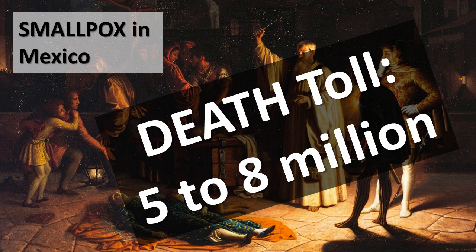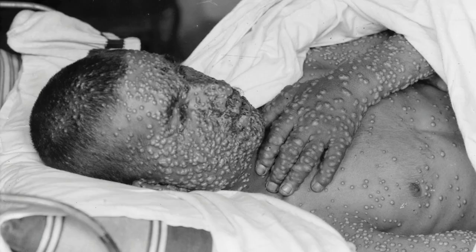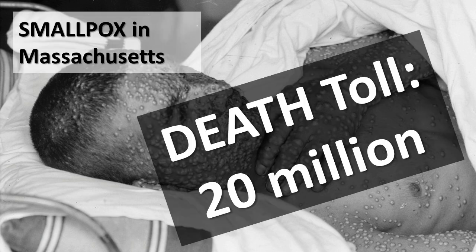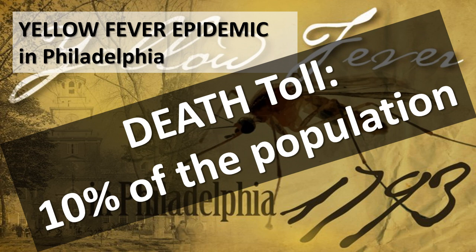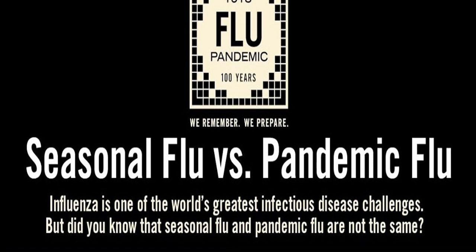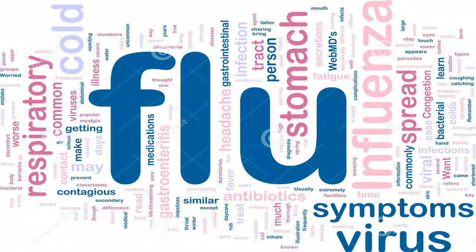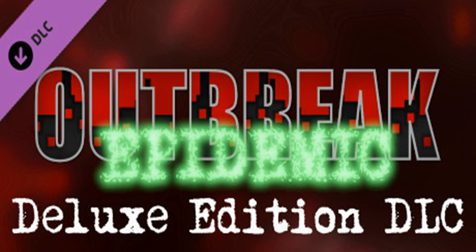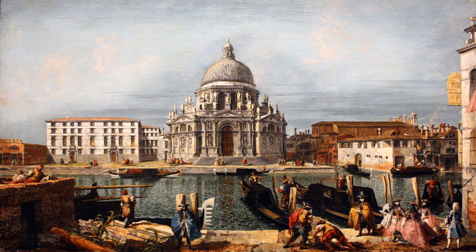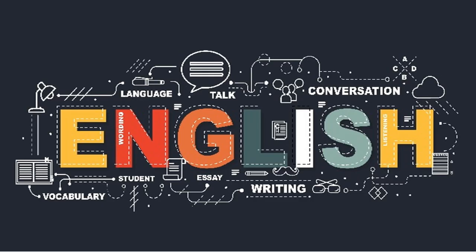In 1633, smallpox reached Massachusetts and some 20 million people died. In 1793, Philadelphia was struck with a yellow fever epidemic that killed 10% of the city's population. It is noteworthy to mention that a pandemic flu is not the same as the seasonal flu. Flu is a clip word for influenza, from Italian language, meaning an outbreak of an epidemic, applied specifically to an influenza epidemic which began in Italy in 1743, and later adopted in English as the name of the disease.